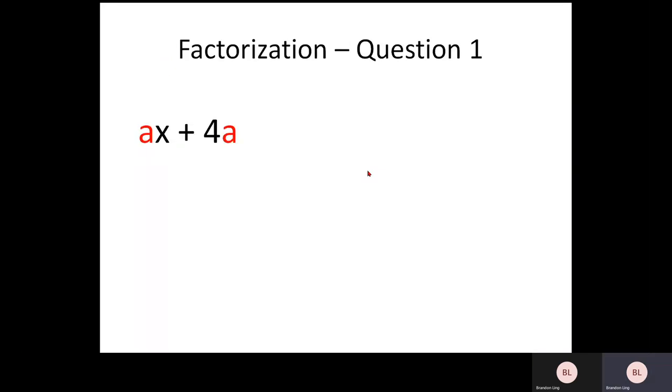Now we go on to factorization. So factorization is the inverse of expansion. When we do factorization, we are actually creating a bracket and we pull out the factor out. So in this case, as you can see, you have AX plus 4A.